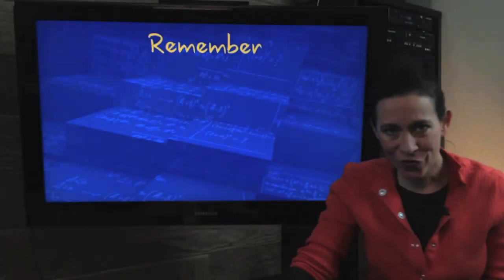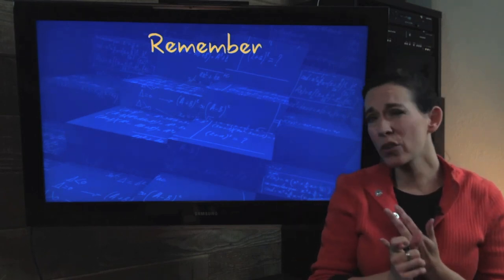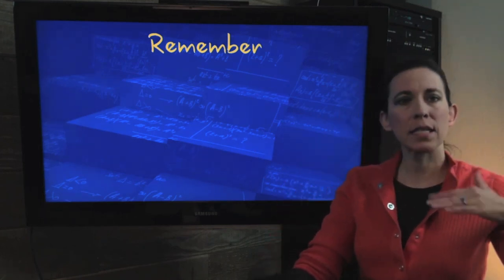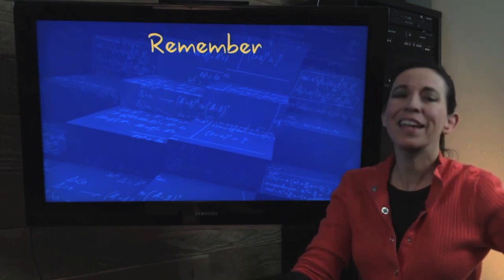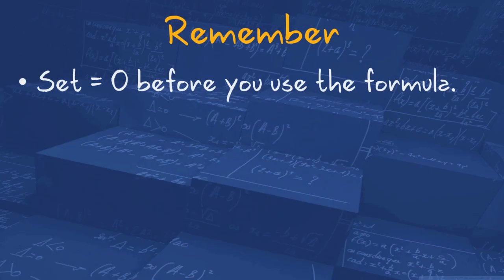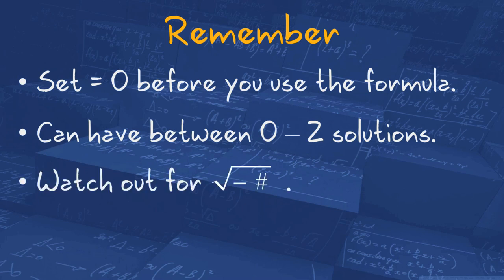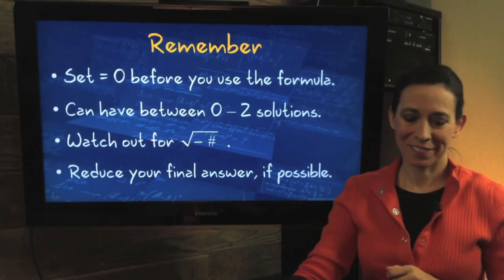So, how did you do? Take a look and see where you made your mistakes. Was it in plugging it in? Did you set it equal to zero? Were you able to reduce it okay? There are different places that people kind of mess up and they need to work on. So, just find what it is and fix it. Easier said than done. I know. But go to your teacher and ask for help. So, remember. Set it equal to zero before you use the formula. You can have between zero and two solutions. Watch out for that negative number underneath the square root. And reduce your final answer if possible.